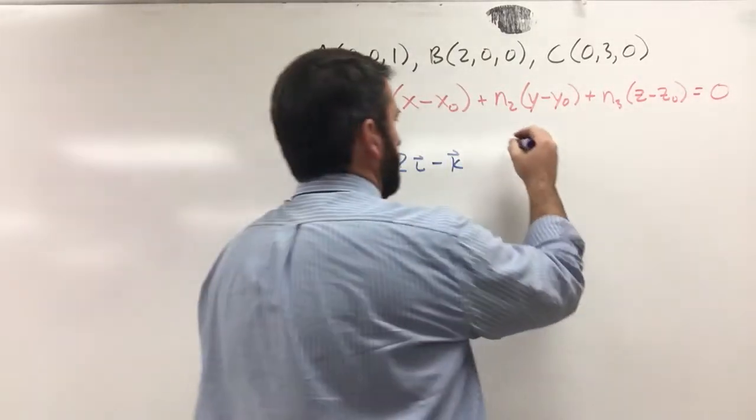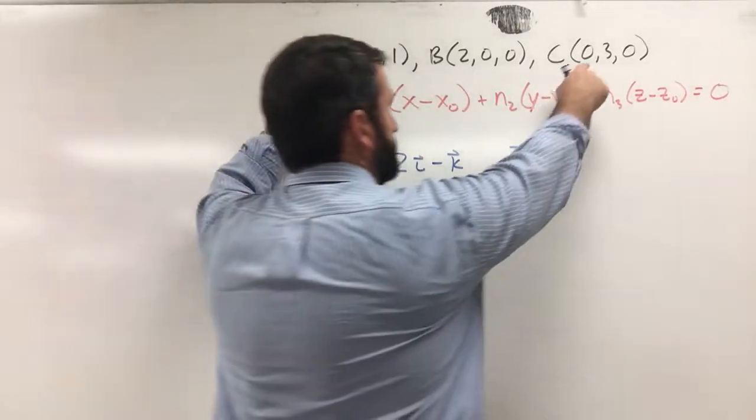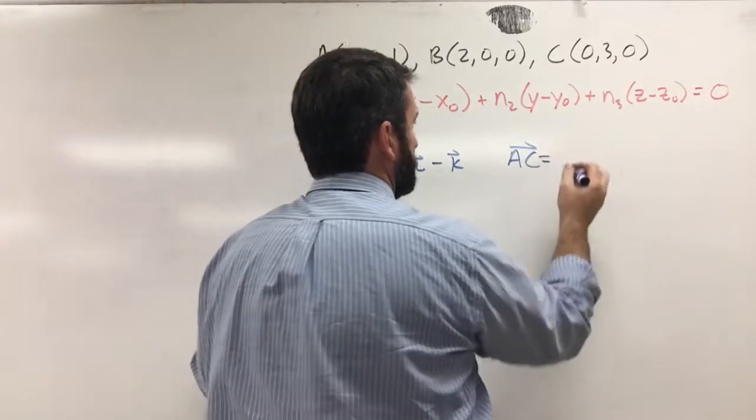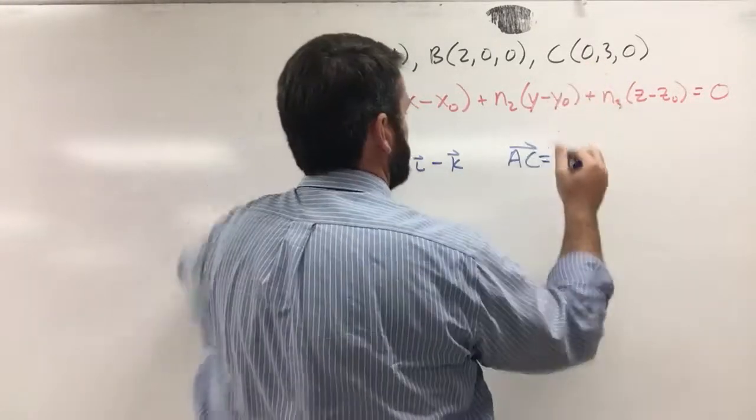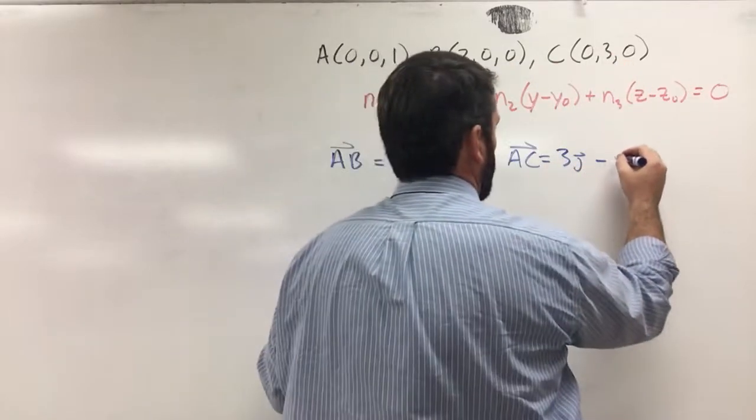And then we're going to have, let's use vector ac. So that's going 0 to 0. That's 0i. 3 minus 0 is 3j. And 0 minus 1 is negative 1k.